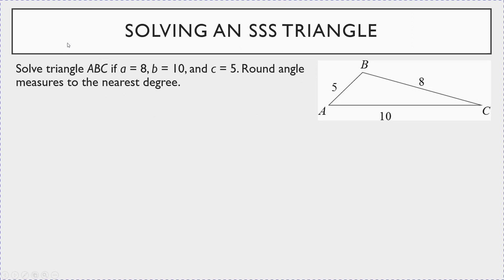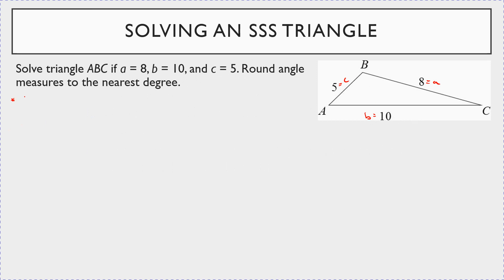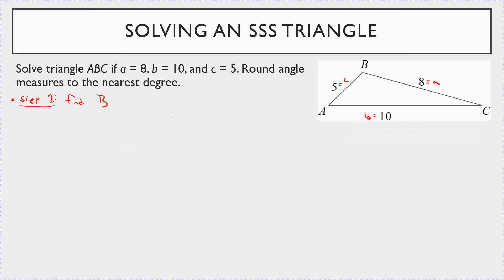Solve triangle ABC where a = 8, b = 10, and c = 5. The longest side is b = 10, so step one is to find angle B. We use the formula b² = a² + c² − 2ac·cos(B), then solve for cos(B).